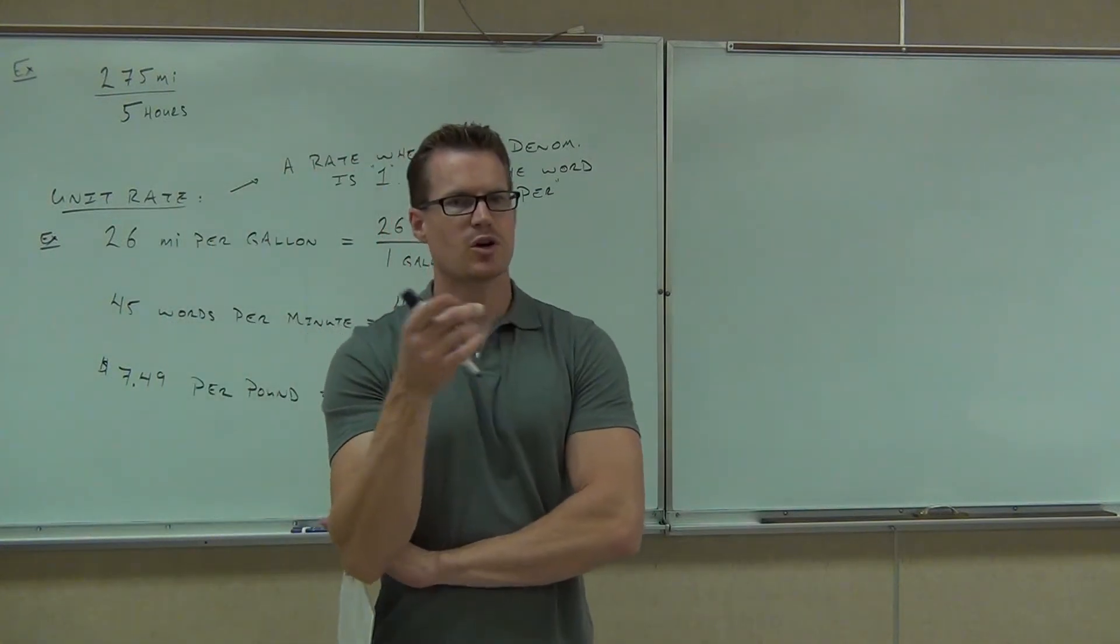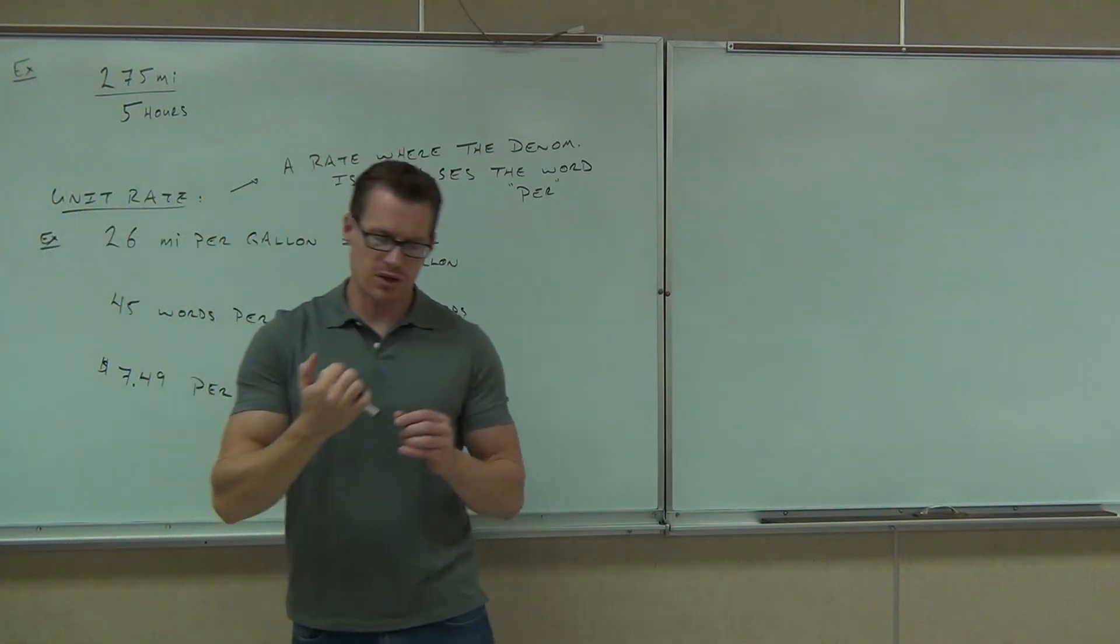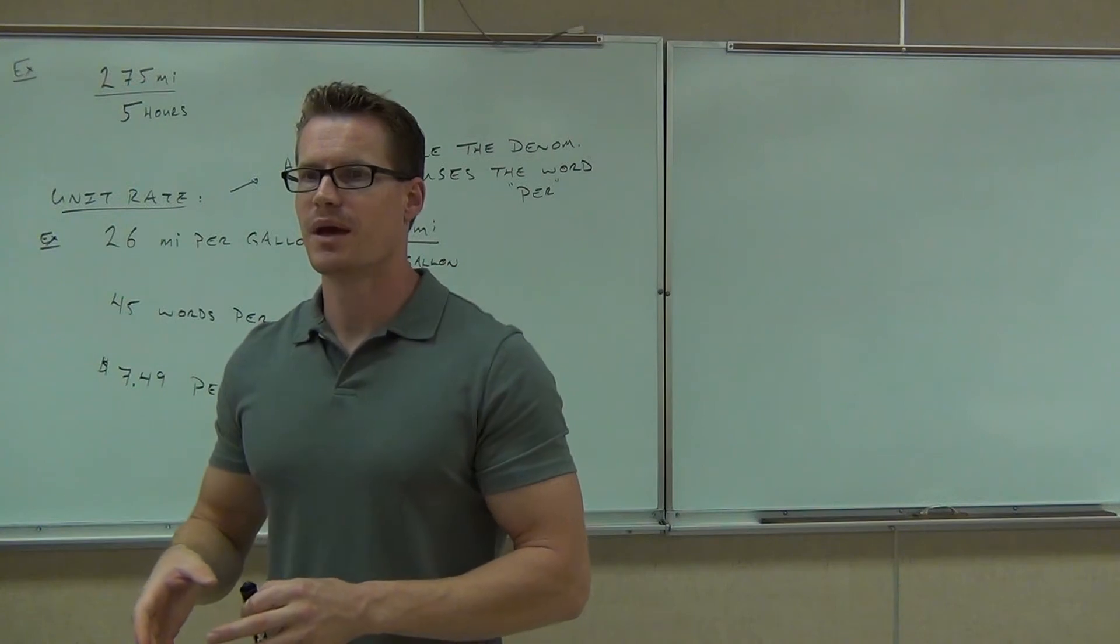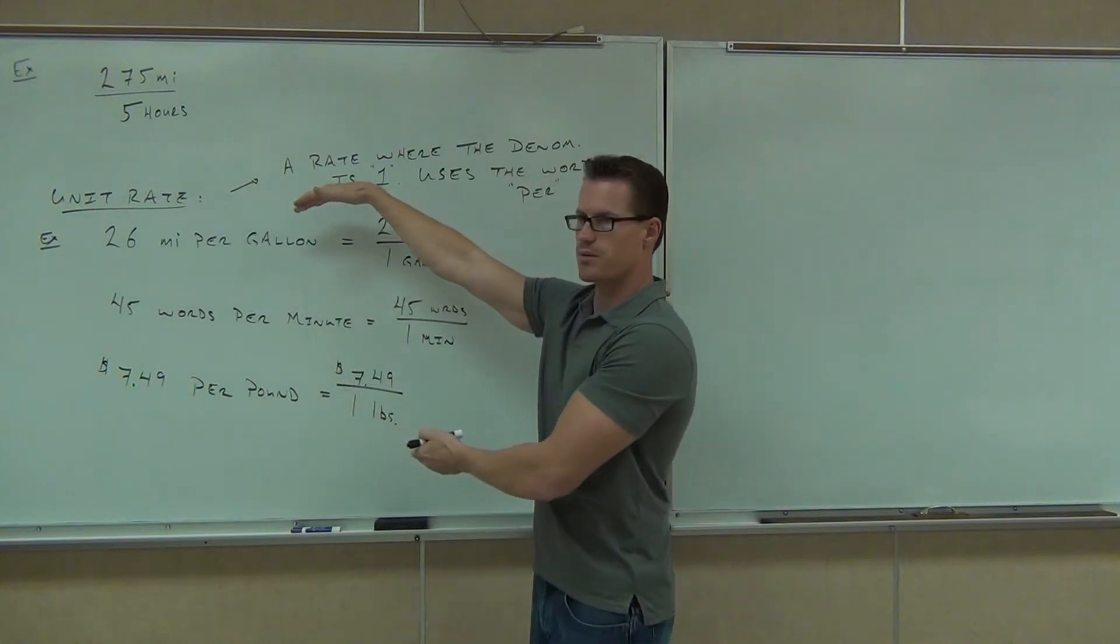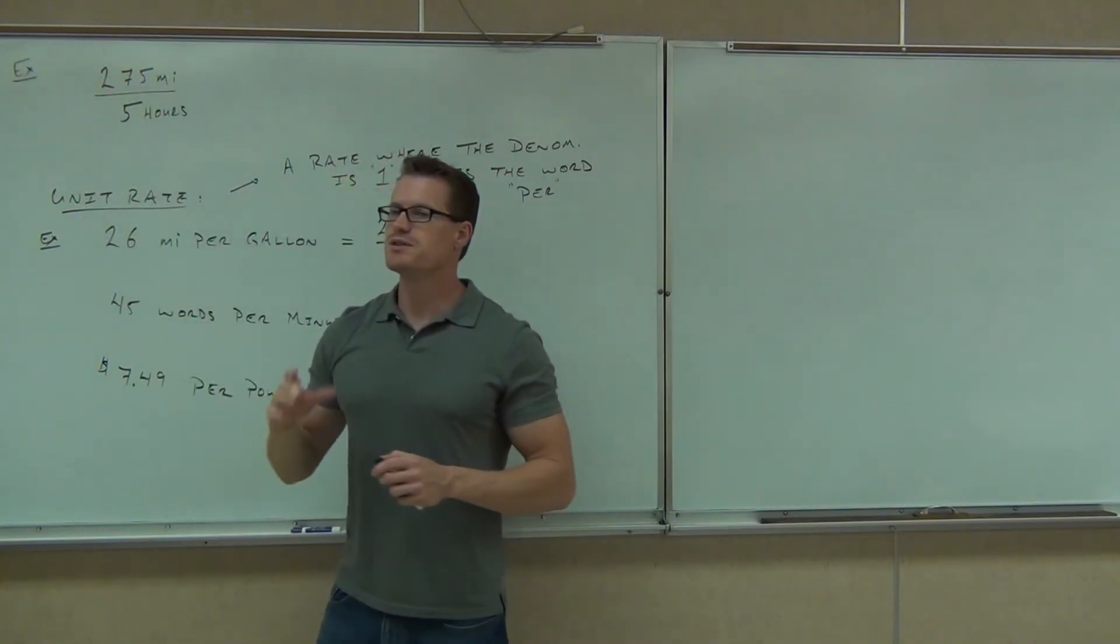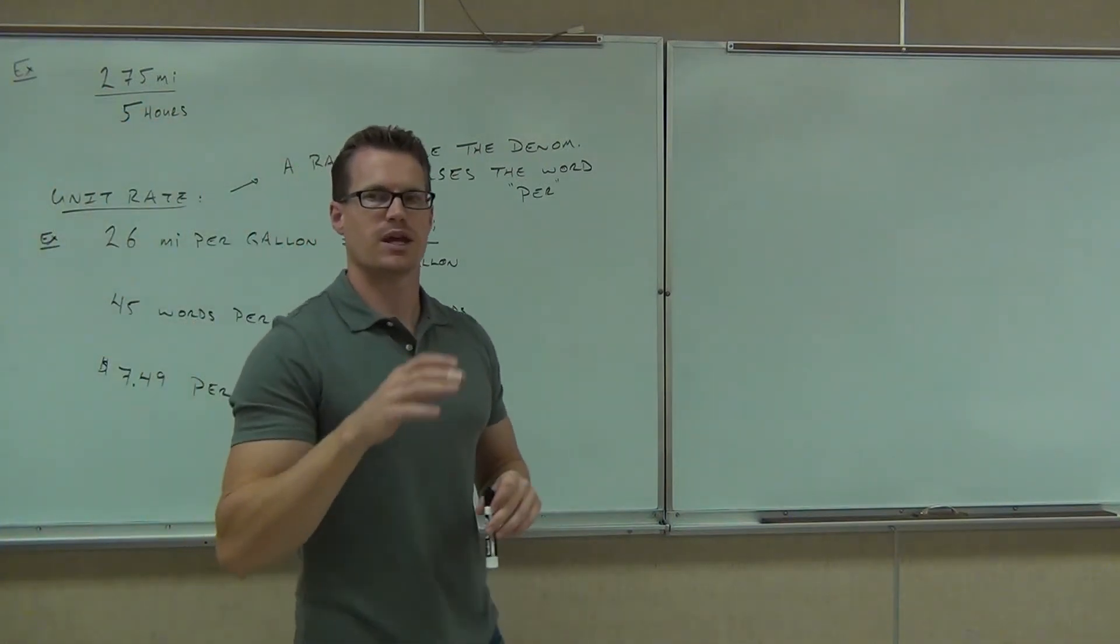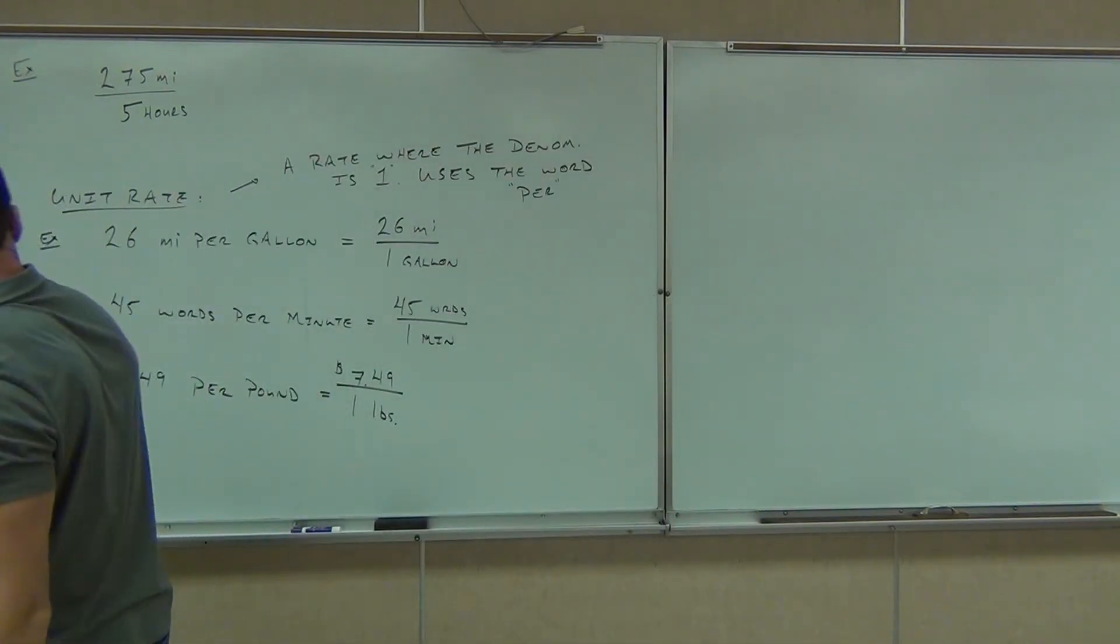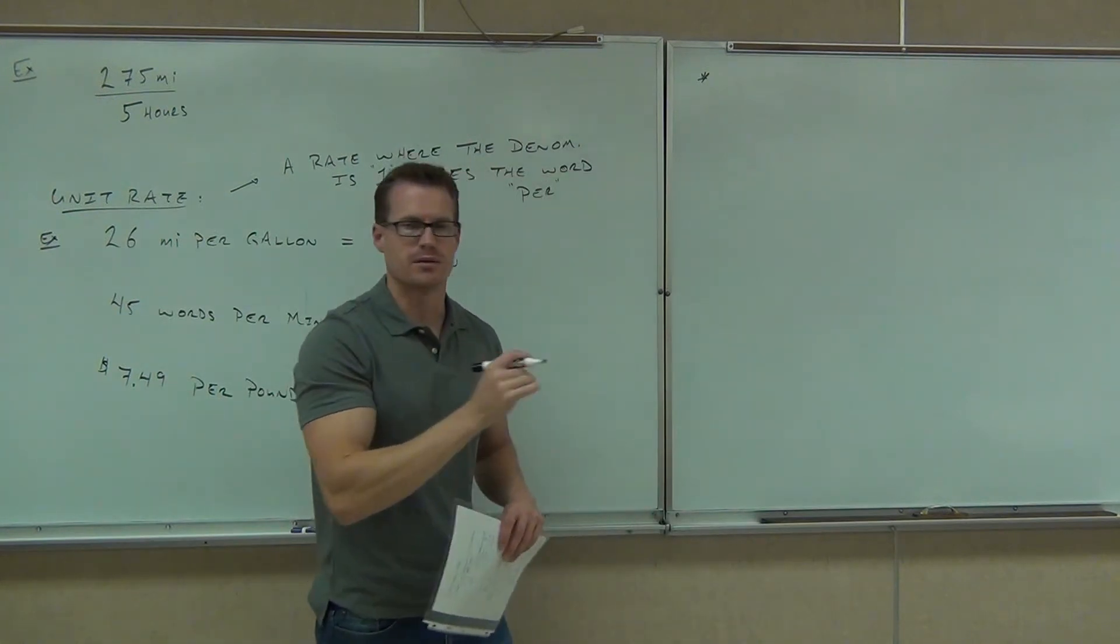By the way, we spoke about this earlier, but if I have this rate, I'm going to get back to this one. This 275 miles over five hours, we said you're not really going to tell the cop I was going 275 miles over five hours. You're going to tell him I was going something miles per hour. Is there a way we can convert a rate into a unit rate? Yes. How? Divide. Divide. It's a division problem. This does mean divide, right? 275 over five. If we divide that, what we're going to end up doing is changing this number into a one, into a unit rate. So, we can convert any rate into a unit rate by division. So, make that little note over here. We can convert any rate into a unit rate simply by dividing.